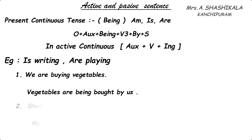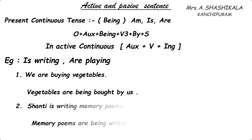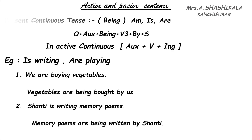See the second example: 'Shanti is writing memory poems.' Here 'memory poems' are plural, so we are going to use 'are', then 'being', then the V3 form, followed by 'by Shanti'. The answer is: 'Memory poems are being written by Shanti.'